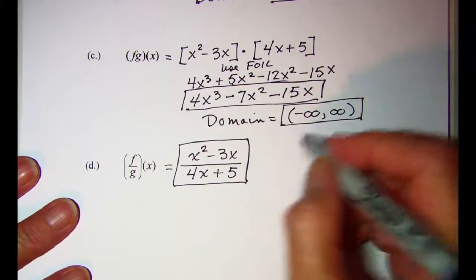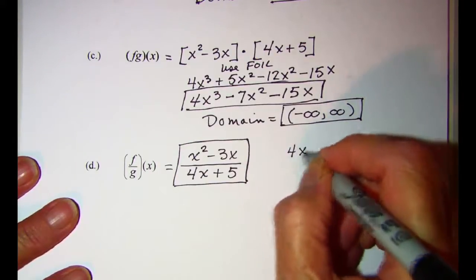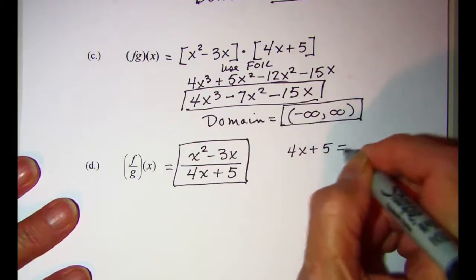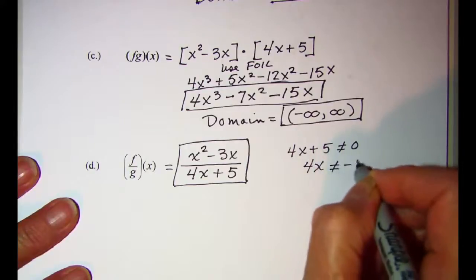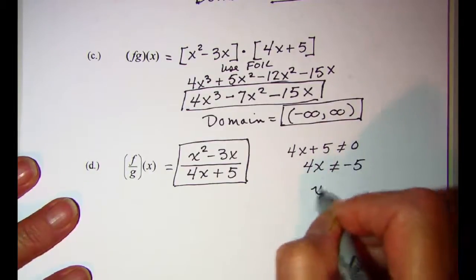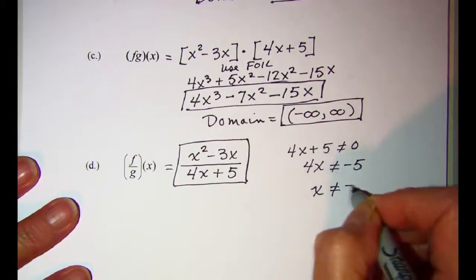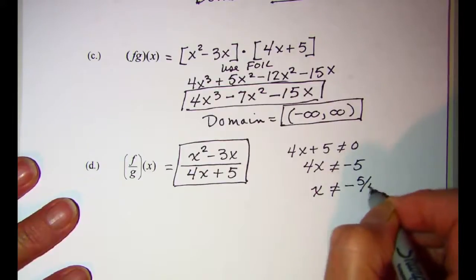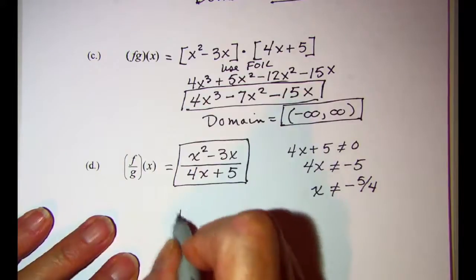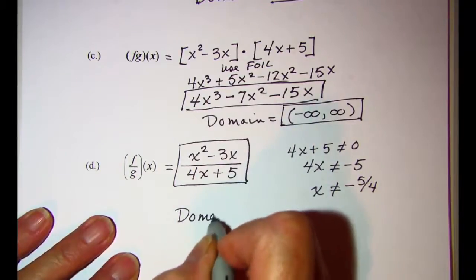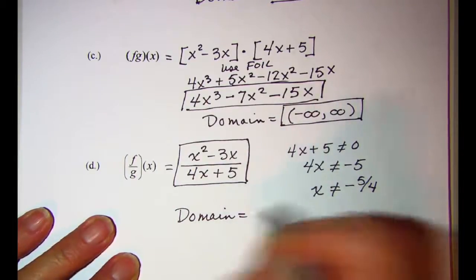I do need to remember that I can't have zero in the denominator, so 4x plus 5 cannot equal 0, which means 4x cannot equal negative 5, and x cannot equal negative 5 fourths—we divide both sides by 4.